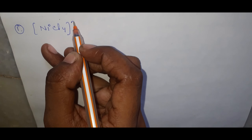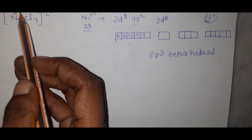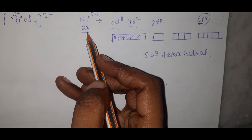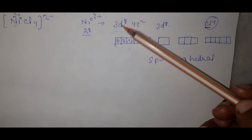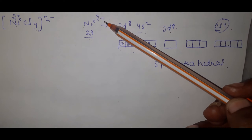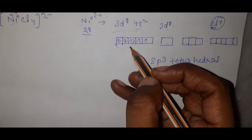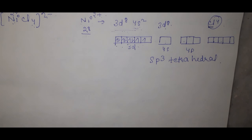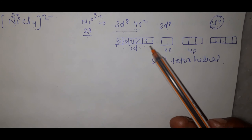Example 1: [NiCl₄]²⁻. The complex has a 2− charge, so Ni has a 2+ charge. Ni has atomic number 28, with configuration [Ar] 3d⁸ 4s². With Ni²⁺, two electrons are removed from 4s, leaving 3d⁸ and 4s and 4p empty. Cl⁻ is a weak ligand, so it cannot cause electron pairing.